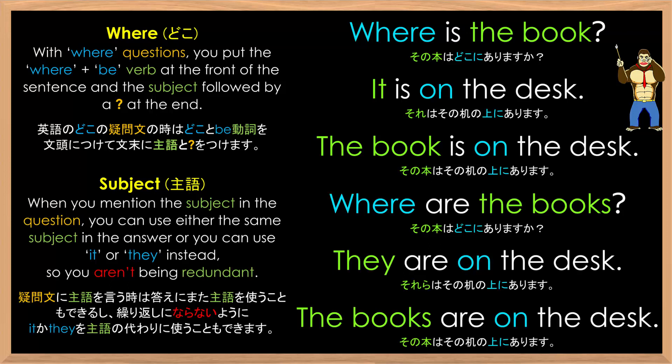So in the first example, where is the book? It is on the desk. It equals the book. So instead of saying the book two times, you could just use it, which is very convenient. And in the second example, where are the books? They are on the desk. They equals the books. So instead of saying the books two times, you can just use the word they. So it is used for the singular and they for the plural case.